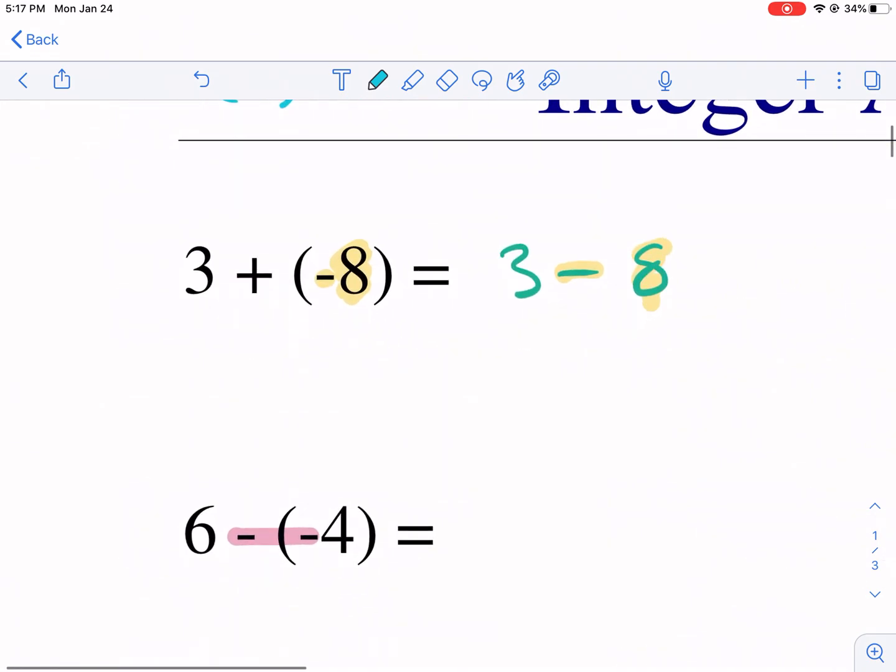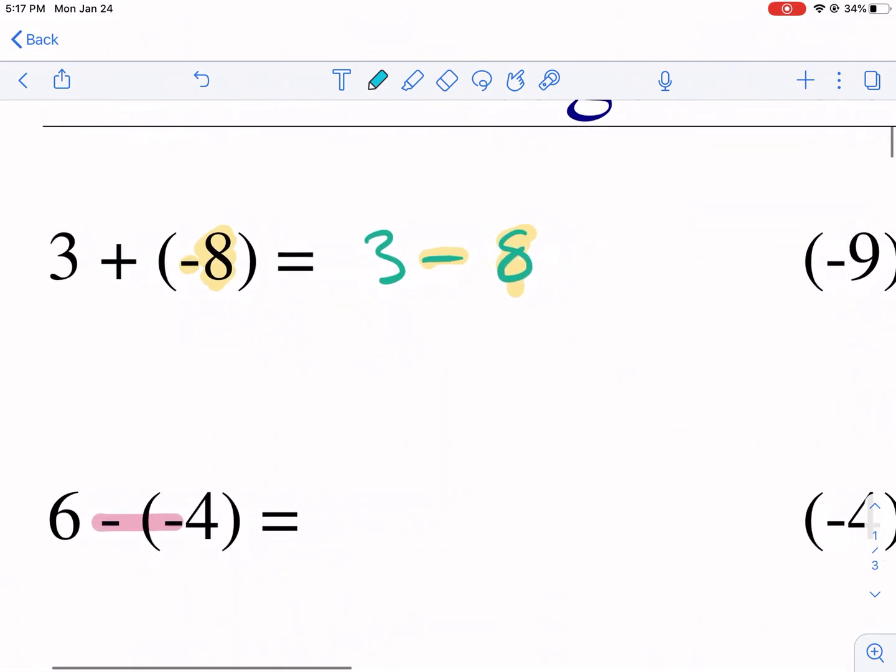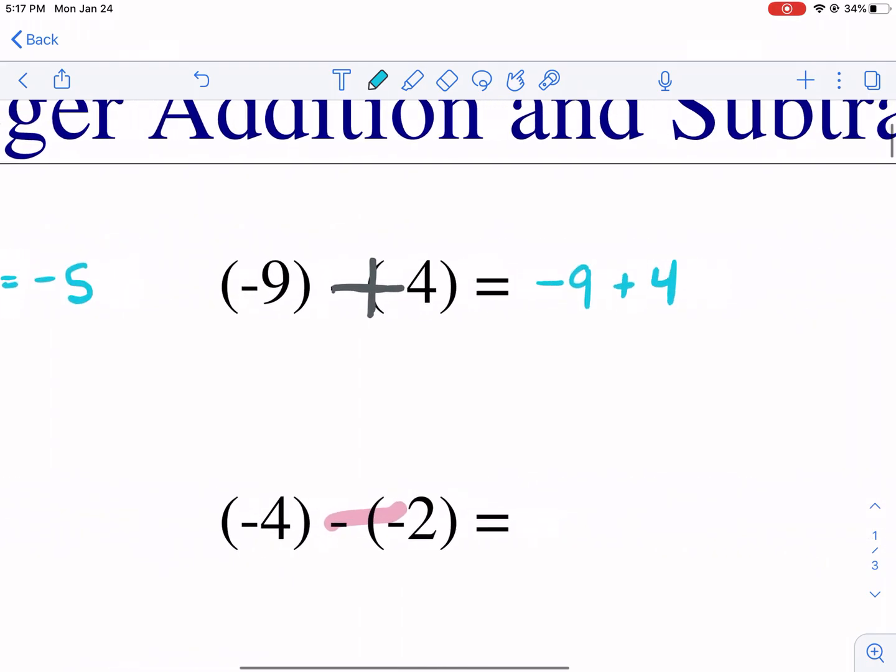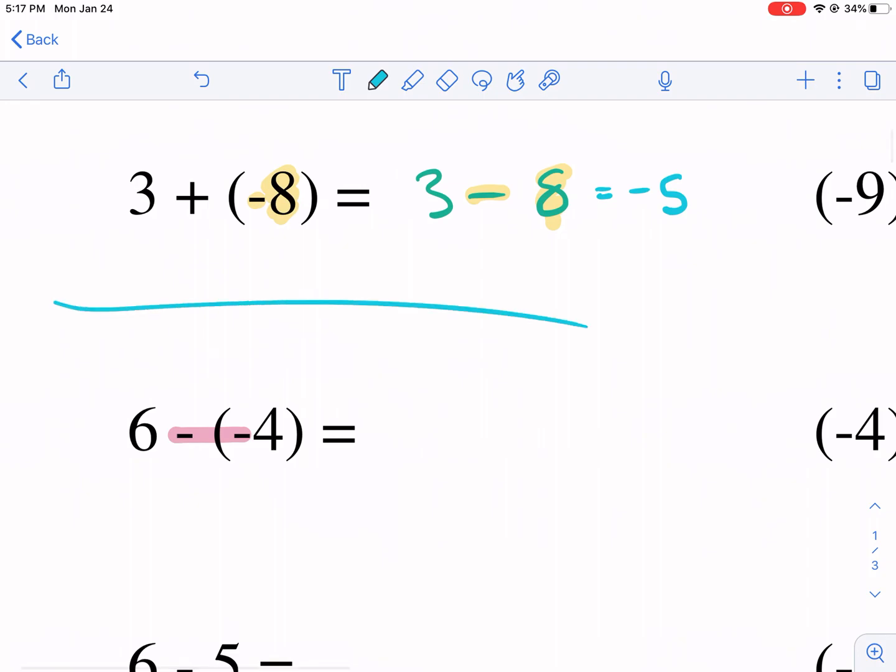So for this one, if we have three and we go in the negative eight direction, we're going to end up at negative five. If we have this one, so if you start on the number line, I'll do that real fast.